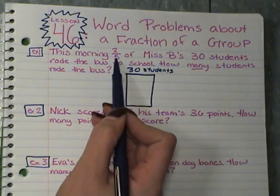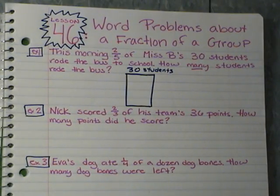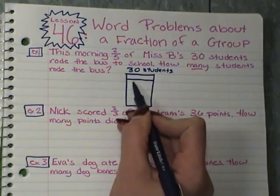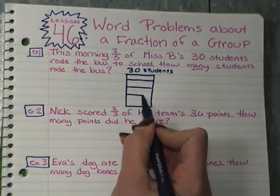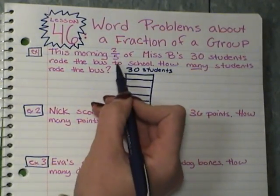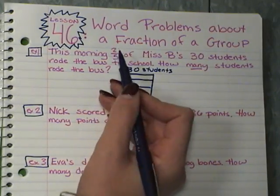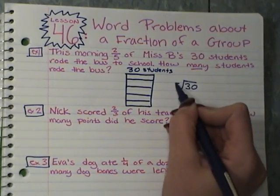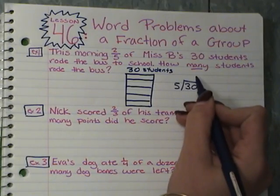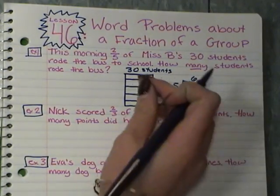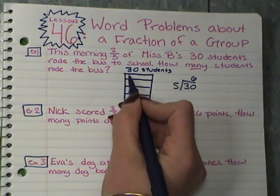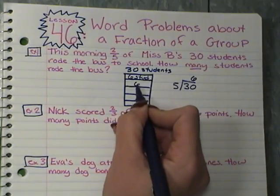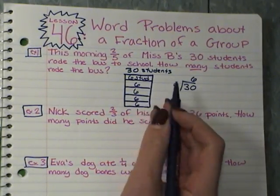The denominator, five, tells us how many parts we're splitting into. I'm going to divide my rectangle into five pieces. Remember, your denominator tells you how many pieces it's out of and your numerator tells you how many pieces you want. I'm going to take 30 students and divide them evenly into five groups, and you should quickly get six. So in each of my small rectangles, I have six students.